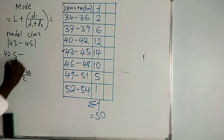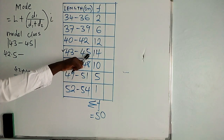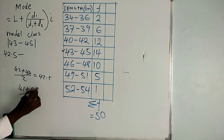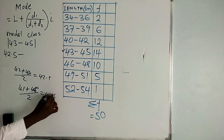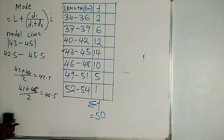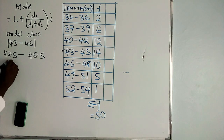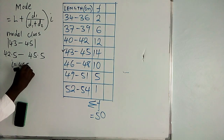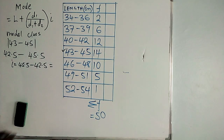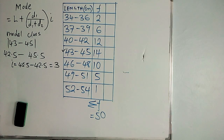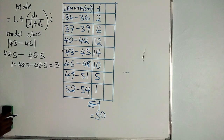For the upper class limit, this class ended at 45 and the next one starts at 46, so the average of 45 and 46 gives you 45.5 as the upper class limit. Once you have found the class limits, you can get the class interval: upper class limit minus lower class limit, which gives you 3.